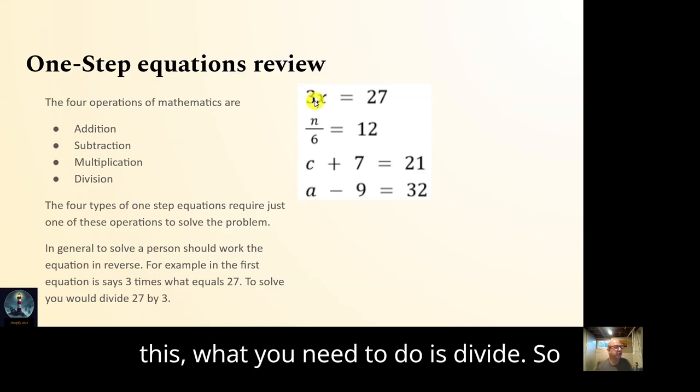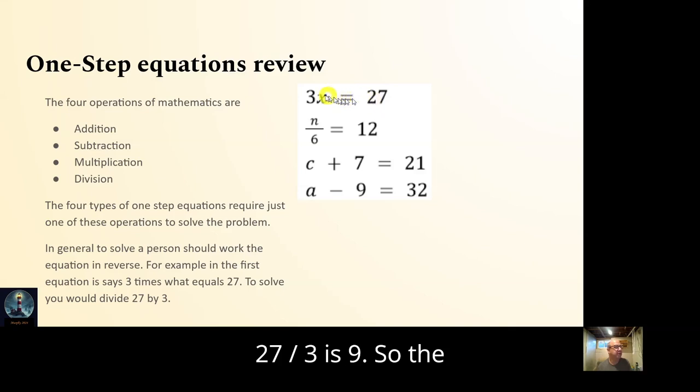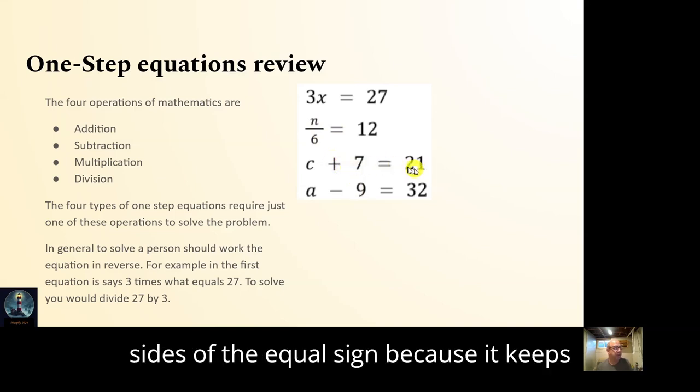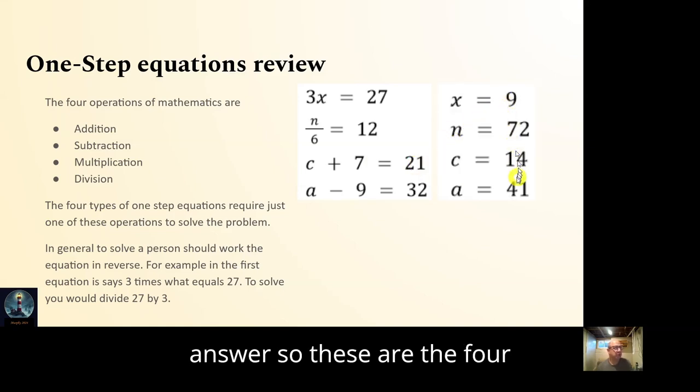To solve this, what you need to do is divide. So that's the opposite of multiplication. So 27 divided by 3 is 9. So the solution for this equation, 3 times what is 27, is 9. And in this equation you're dividing, so you multiply by 6. Here you'd subtract 7. Here you'd add 9. And what we say is we do this on both sides of the equal sign because it keeps it equal. And also if I subtract 7 here, the 7 disappears. And if I subtract 7 here, then I have the answer. So these are the four answers.